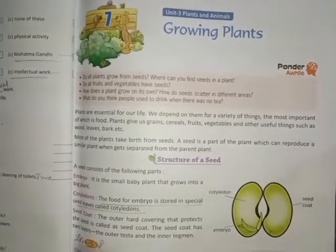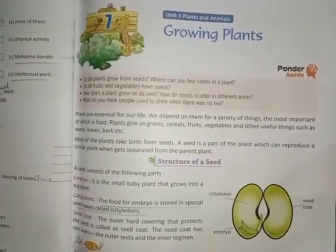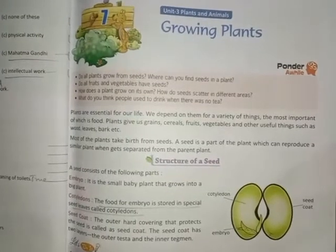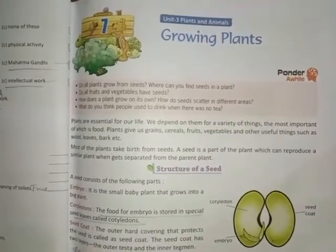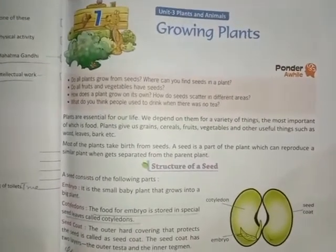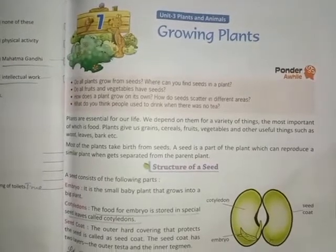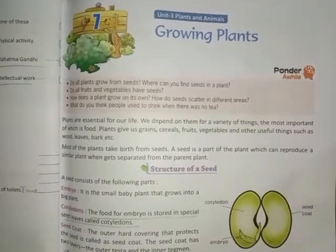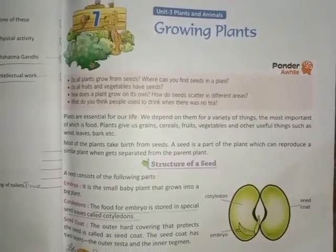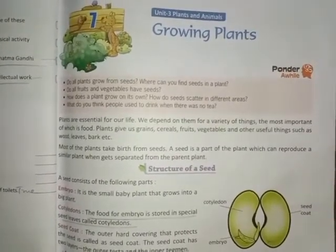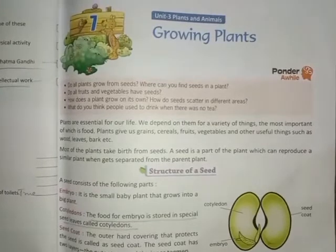A plant needs sunlight, carbon dioxide, minerals and water to make food by photosynthesis. A green pigment in plants called chlorophyll traps the energy from the sun needed to make food.